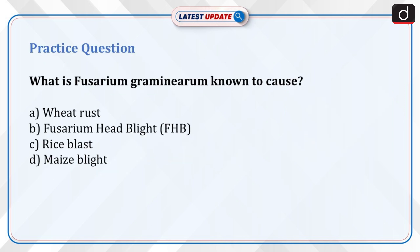It's time to test your knowledge. What is Fusarium graminearum known to cause? A. Wheat rust, B. Fusarium head blight (FHB), C. Rice blast, D. Maize blight. Send the answer in the comment section.